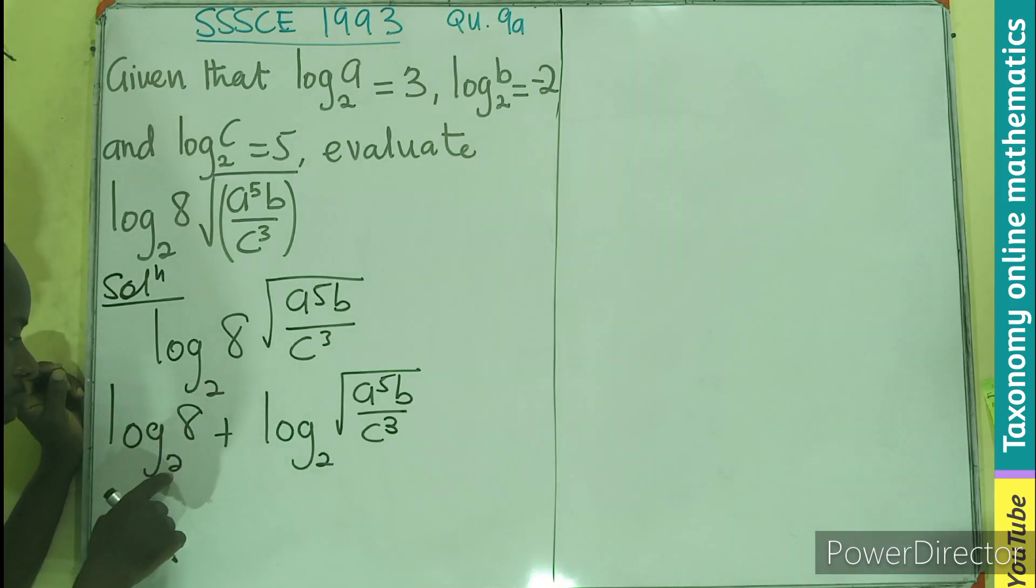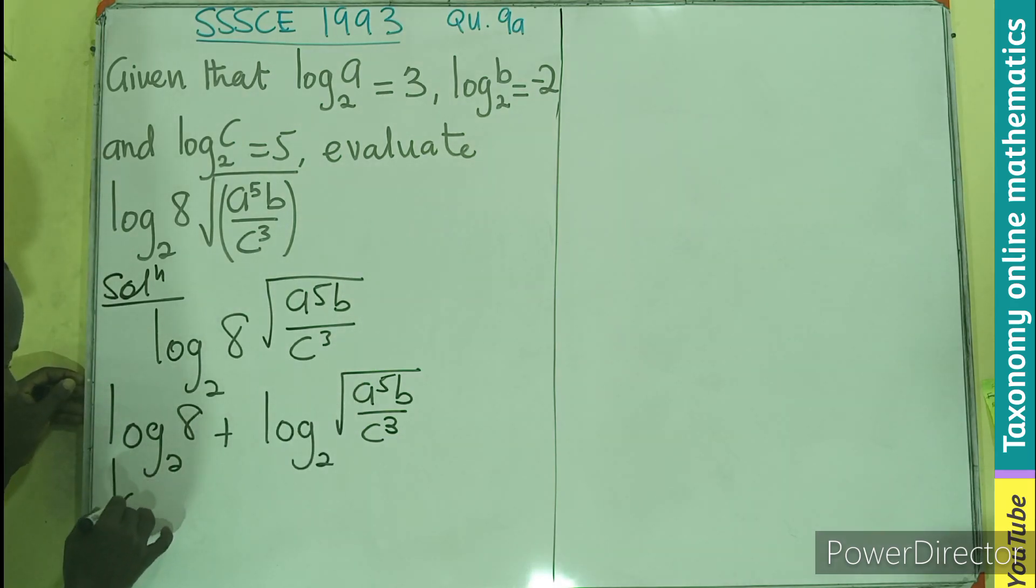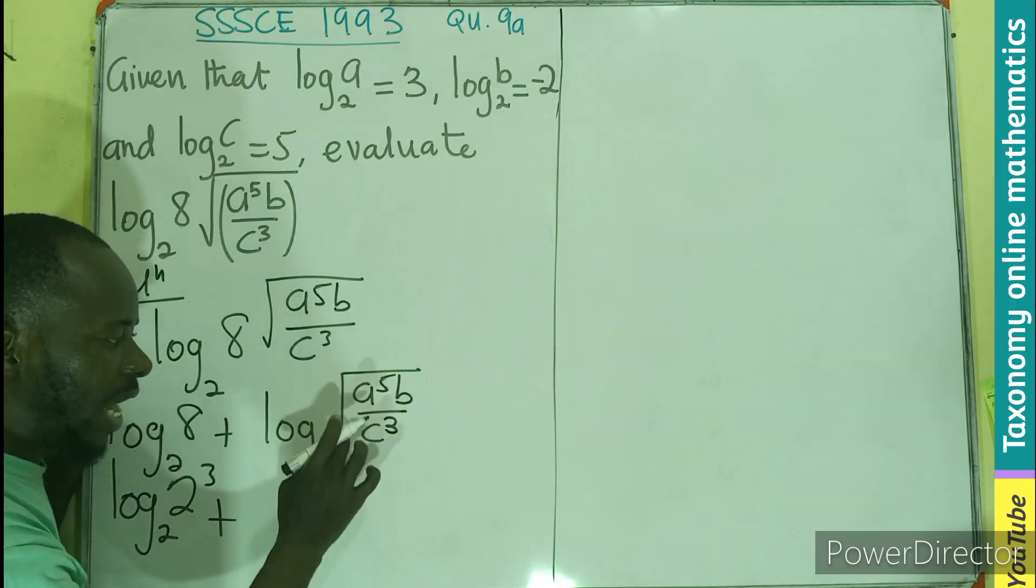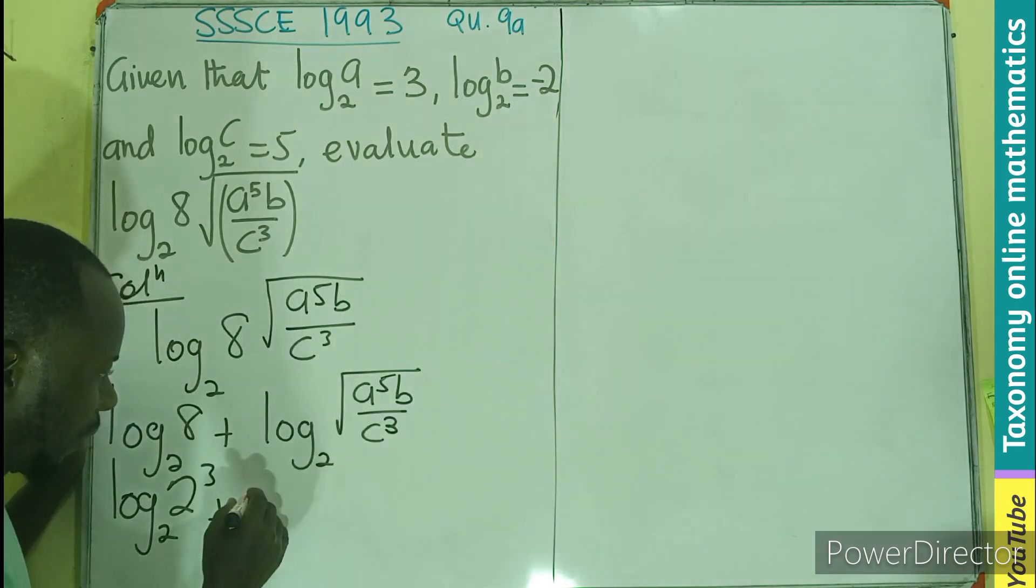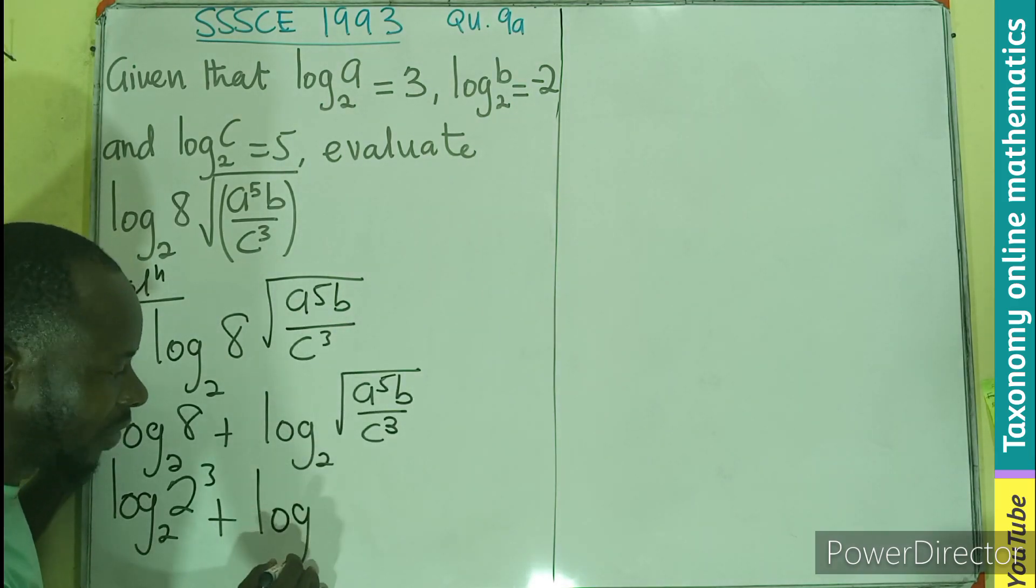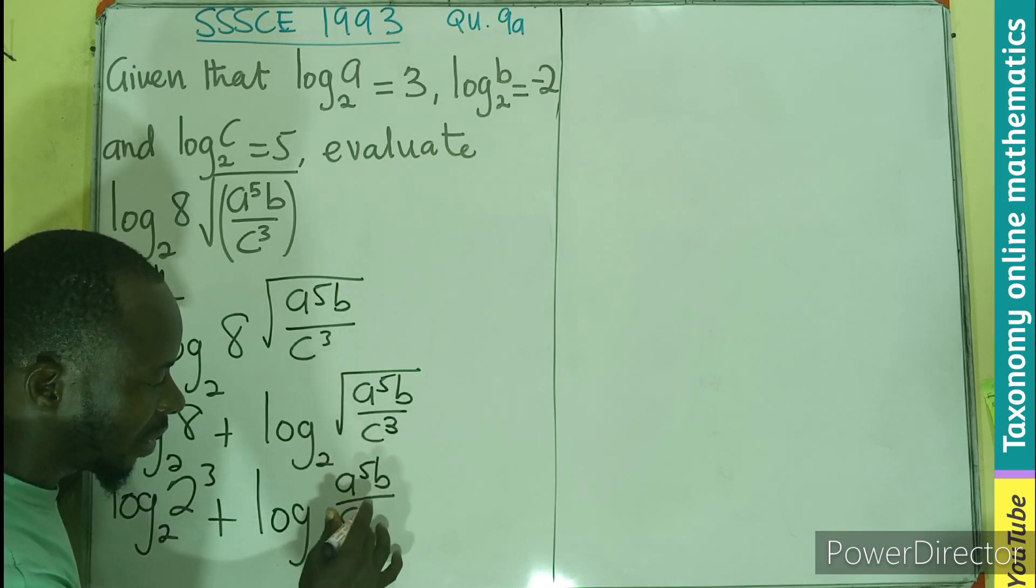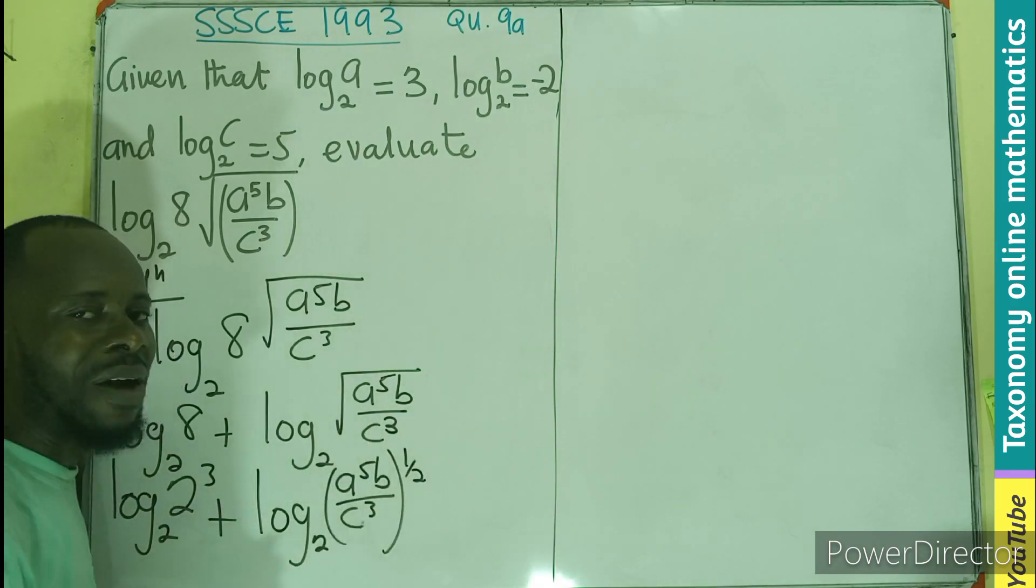Here, we know we are having base 2, so we can express 8 in terms of base 2 and an exponent, meaning the log of 2 exponent 3 base 2. 2 exponent 3 gives rise to 8, then plus. In the case of this, a square root is also taken as a power of half, meaning I'll be having the logarithm of A to the power 5, B, C to the power 3, base 2, all of these raised to the power 1 half.